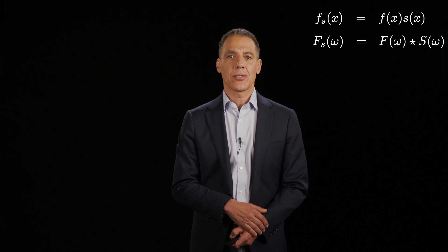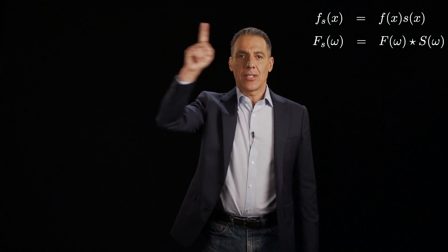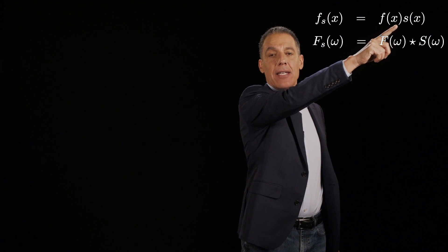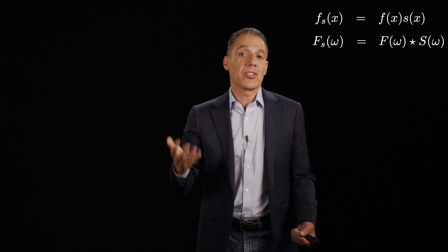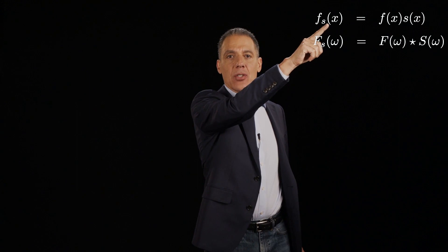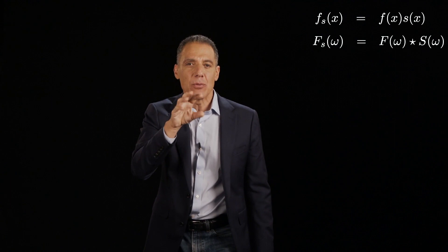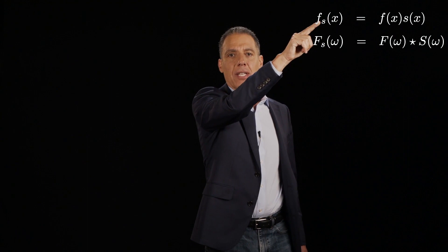We're ready now to start looking more carefully at that sampling process. Let me remind you where we left off. We're going to take a continuous signal f of x and multiply it by an impulse train that has a value of 1 at integer multiples of some sampling frequency T. That gives rise to f sub s. Notice everything here is continuous — I haven't actually done any real sampling yet in terms of creating a discrete signal. This is all in the continuous domain, everything in rounded brackets.